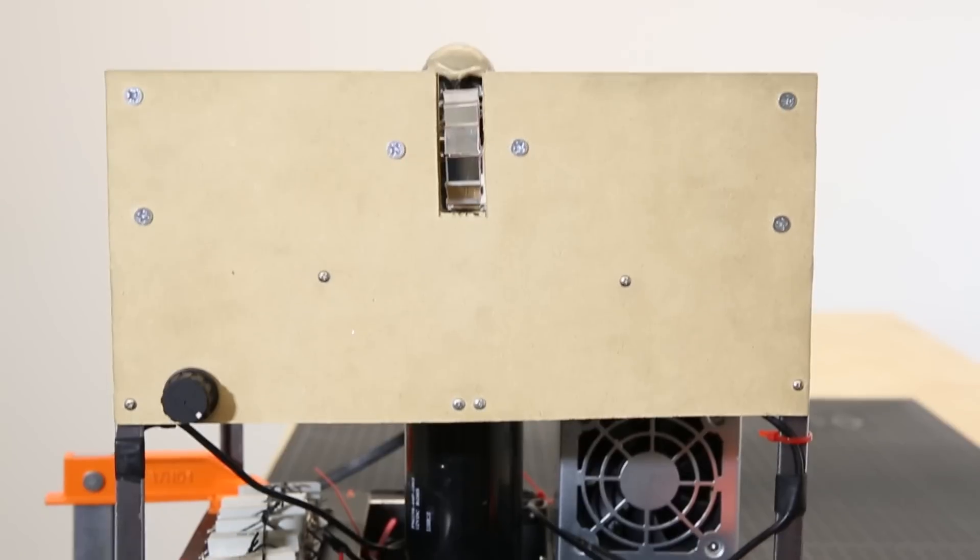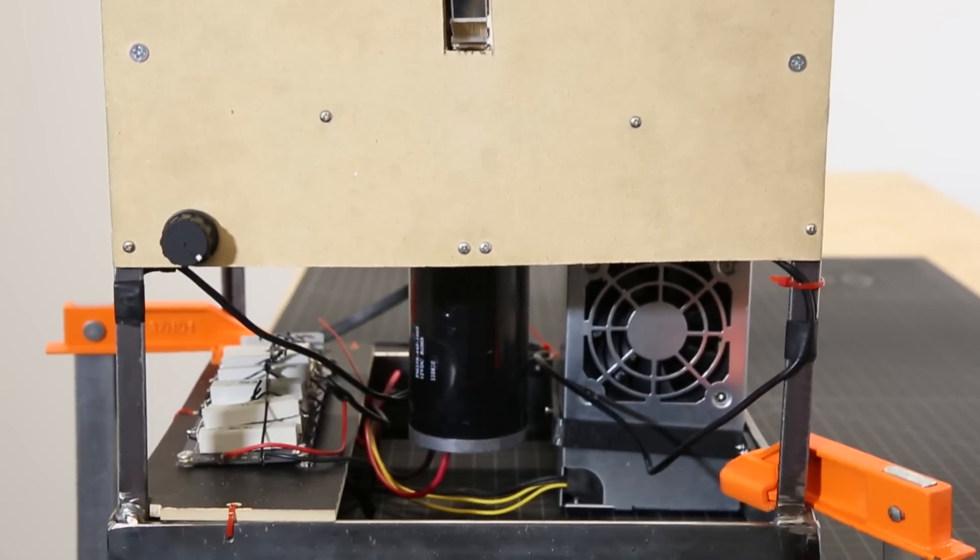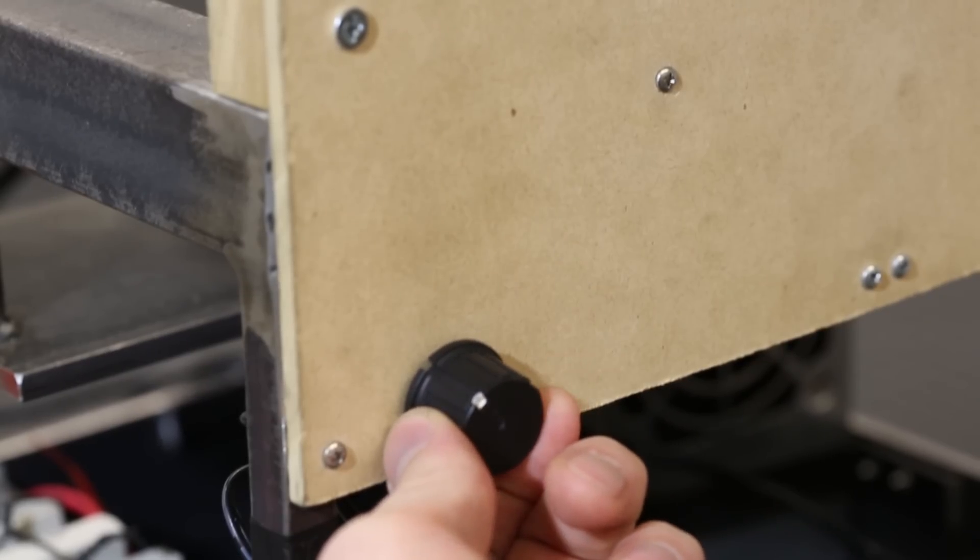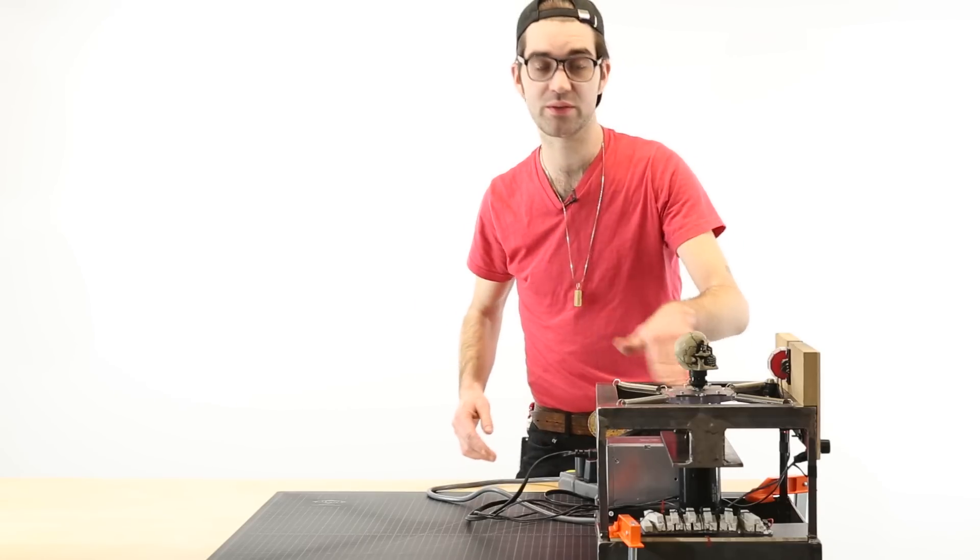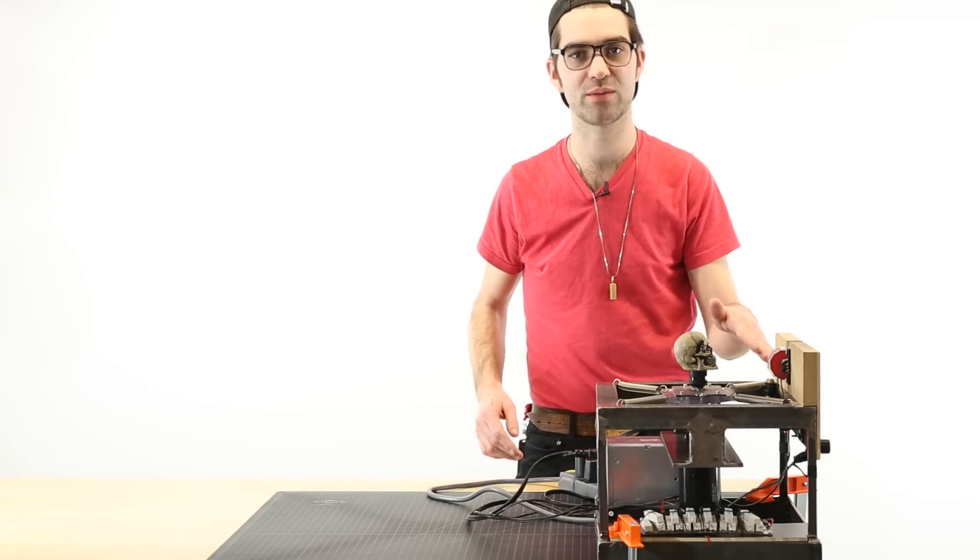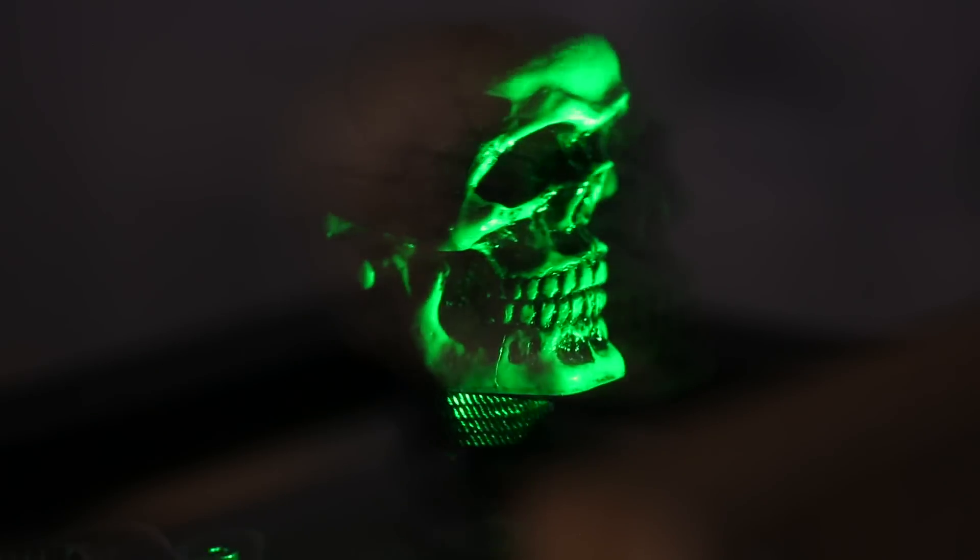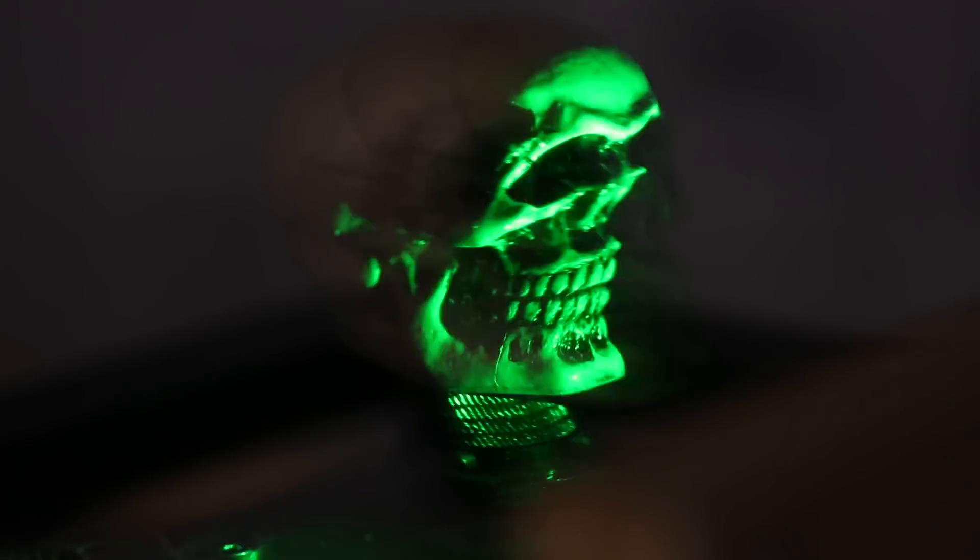So this potentiometer down here controls the speed of this mirrored wheel as it spins, and that allows you to change the way that the frequency of the scan interferes with the frequency of the oscillation of the object. So you line it up at like a first or second harmonic so that it'll spiral either one time around or twice around in the distortion.